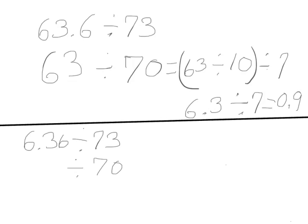My divisor will again round to 70. My whole will round to 6 and 3 tenths. When I divide, I'm going to decompose my 70.